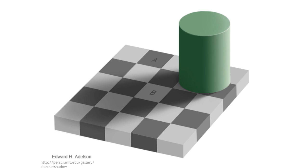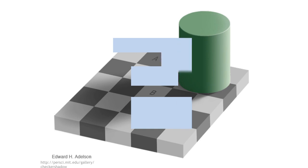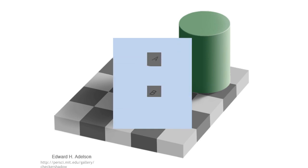Let me show you. We'll isolate that — we'll pull square A over to square B and you see, aha, same color. Don't believe me? Let's try it another way. We block off the edges. You see A and you see B. They're the same color. And yet when I take those edges away, you still see them as different colors.